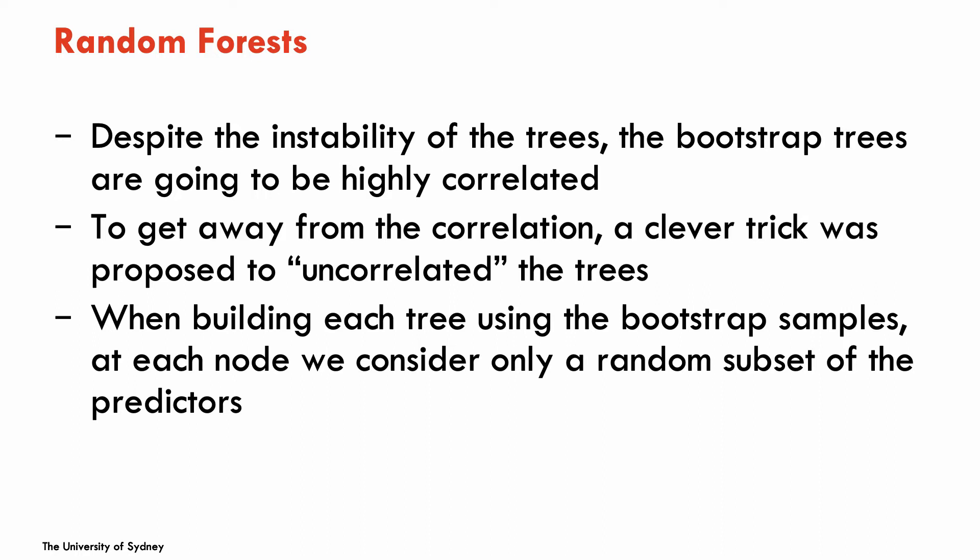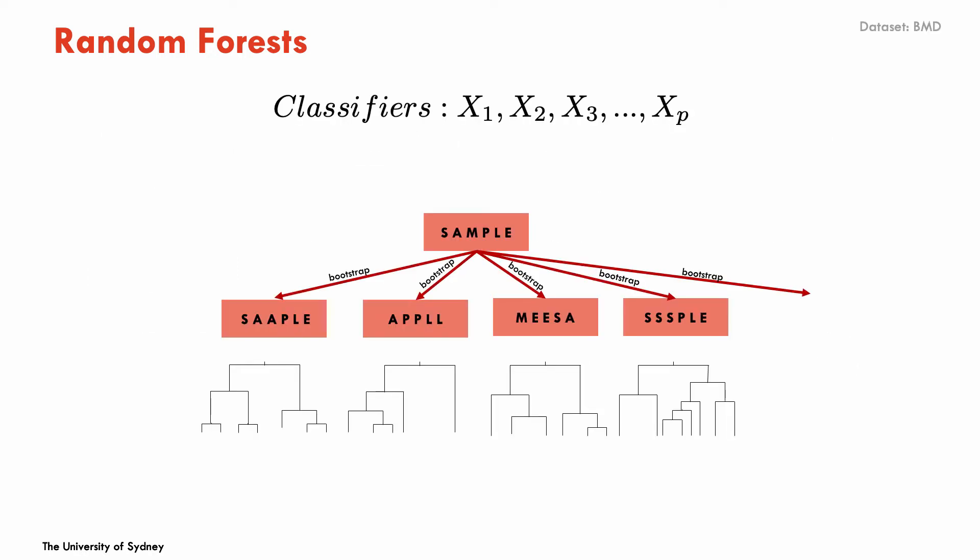So the idea is the following. When growing the trees in each bootstrap sample, rather than evaluating the entire set of predictors at each node to decide on the split, we're just going to evaluate a smaller number of randomly selected predictors.